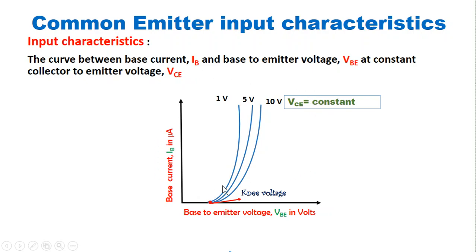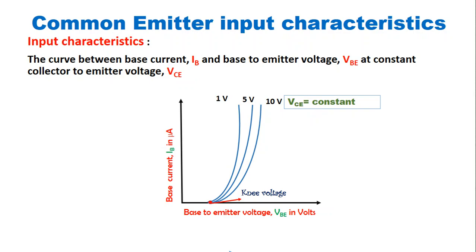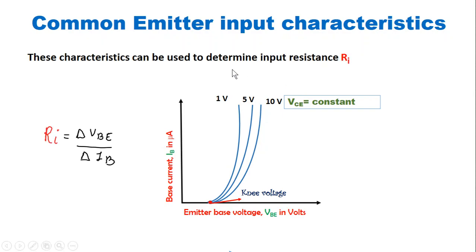These characteristics are drawn by considering an NPN transistor. Here we have taken base to emitter voltage VBE — that is input voltage — on the X axis, and input current — that is base current IB in microamperes — on the Y axis. The different curves are drawn at different values of output voltage, which is collector to emitter voltage VCE, as shown in the figure. These characteristics can be used to determine input resistance RI.